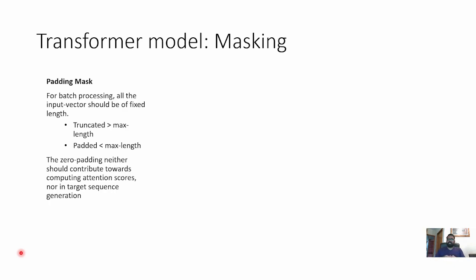Why is masking especially required for transformer models? If we have padded tokens and there is no masking mechanism to handle them, they will contribute towards computing the attention scores, which is not correct. So we use attention masking to avoid padded tokens contributing towards computing attention scores, as well as to prevent them from contributing towards generating the target tokens. These are the main reasons why it is crucial to have the masking mechanism in place.